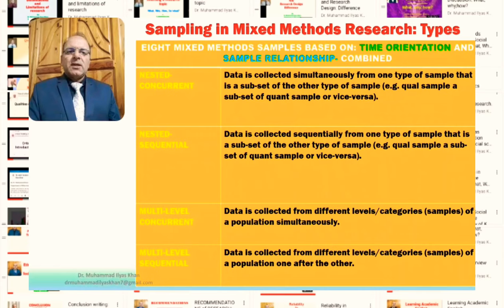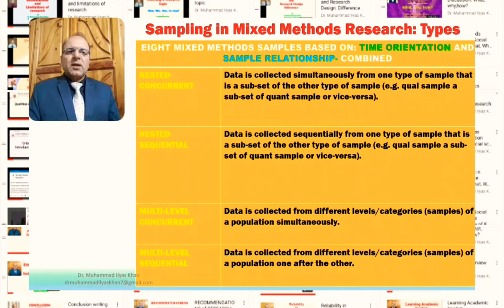The multi-level concurrent sampling method is where data is collected from different levels or categories of a population simultaneously. The population is generally the same but has different categories or levels — those categories could be based on gender, age, or some other characteristic — and the broader population is the same but the sample differs in terms of certain characteristics.